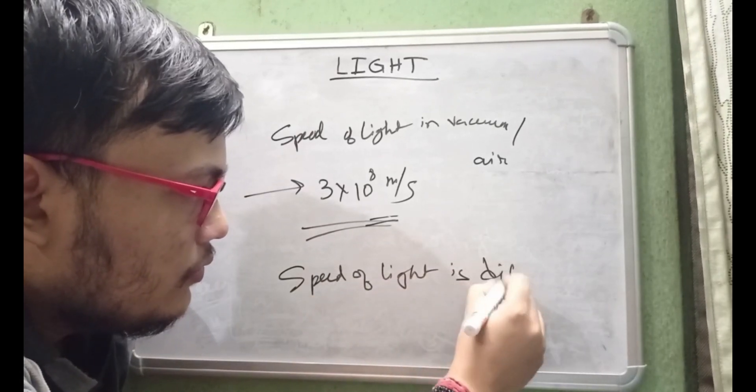So if we take the pair air and water, then air is the rarer medium and water is the denser medium. Similarly, if we take the pair water and glass, then water is the rarer medium and glass is the denser medium. We can only distinguish between rarer and denser by comparing two mediums.